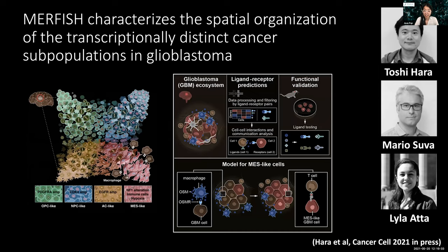Toshi and Mario's lab conducted functional validations in xenograft models showing that this spatial co-localization is not random — there is a specific receptor-ligand interaction between macrophages and mesenchymal glioblastoma cells that mediates the transition of glioblastoma cells into the mesenchymal state. This work, demonstrating that immune cells drive glioblastoma cells into different states, is currently in press at Cancer Cell.